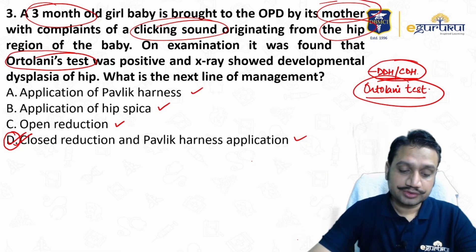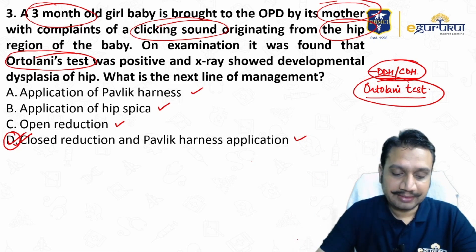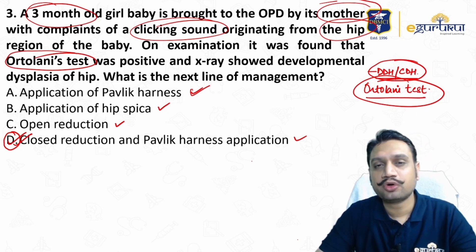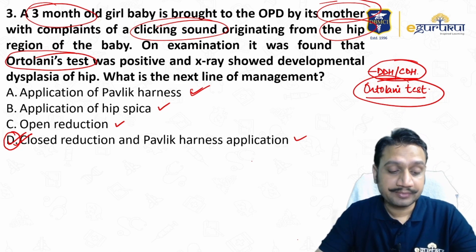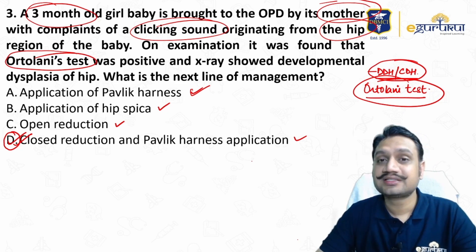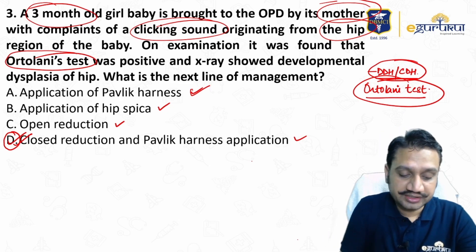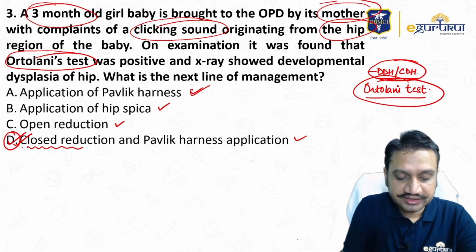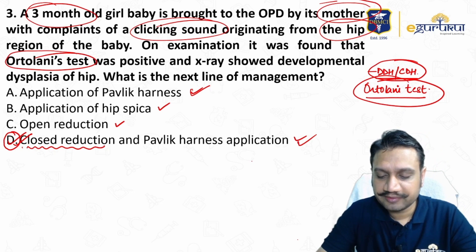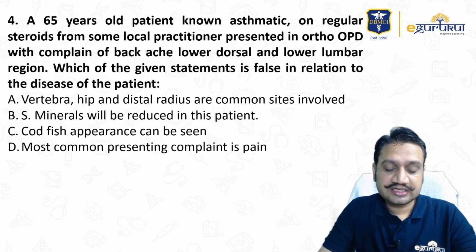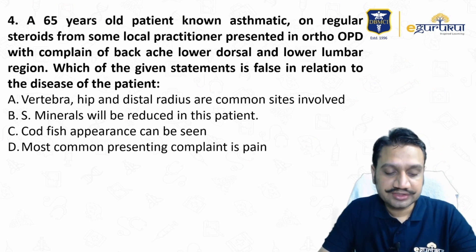For surgical management of CDH, remember the steps: cut the skin, cut the fascia, split the muscle, cut the hip joint capsule, identify the hip joint, then try to reduce the femoral head into the acetabulum. If required, perform a derotational osteotomy, then closure. Since the Ortolani test is positive — meaning the hip is already reduced — closed reduction and Pavlik harness application is the answer.